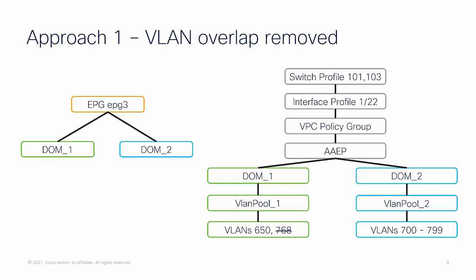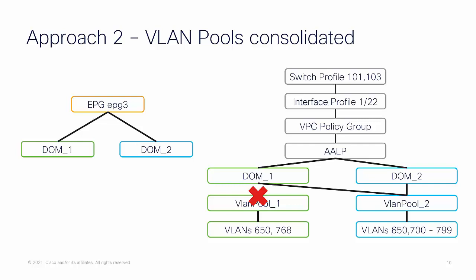While there are multiple approaches to correct this, the goal is the same for all of them: to ensure that all domains referencing any given EPG do not have overlapping VLANs. One approach is to remove the overlapping VLAN from all but one VLAN pool being referenced. This may not be ideal if the overlaps exist across large ranges of VLAN blocks. Another approach is to point all reference domains to the same VLAN pool; missing VLANs will have to be created on the target VLAN pool. If VMM domains are in use, take care to validate which VLANs are set to dynamic versus static allocation prior to conversion.